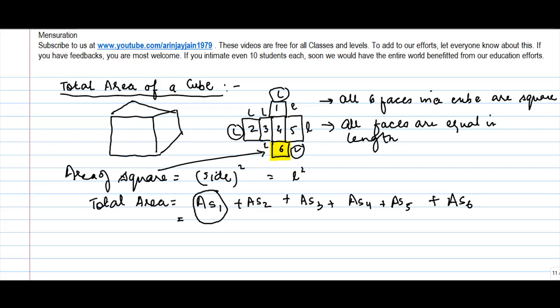But we know that area of first square is how much? L square. And because the length is common in all of them, so you will have six times you add L square, or six L square.